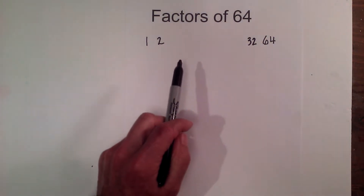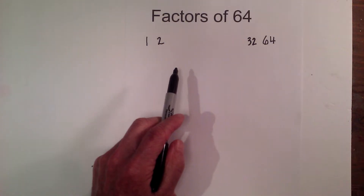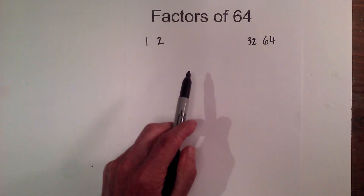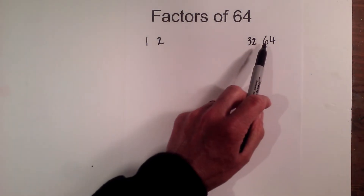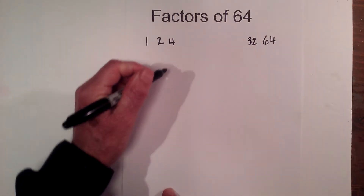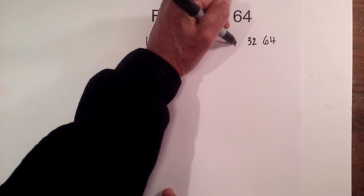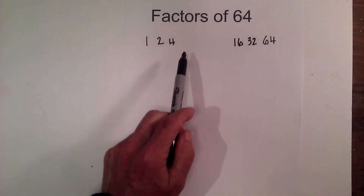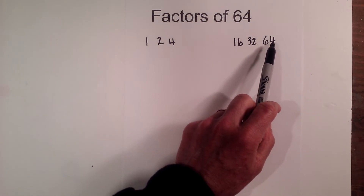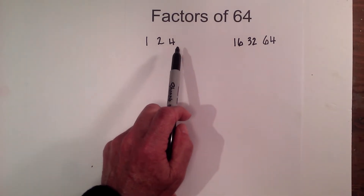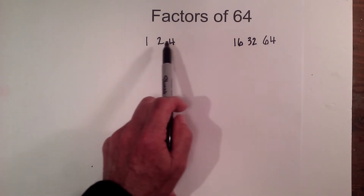Next is 4. The divisibility rule for 4 involves the last two digits, but I know that 4 divides into 64 and goes in 16 times. Next I try 5 — it does not end in a 0 or 5, so 5 does not divide in. Does 6 divide in? No, because both 2 and 3 must divide into a number, and 3 does not.